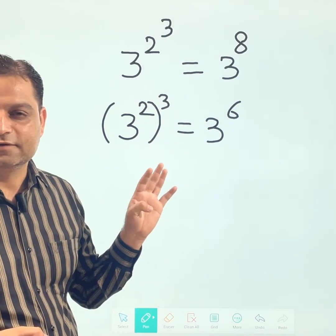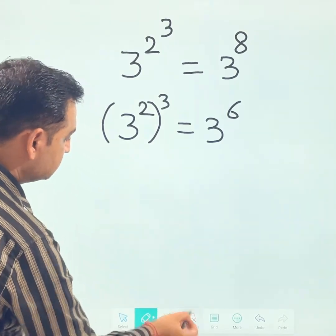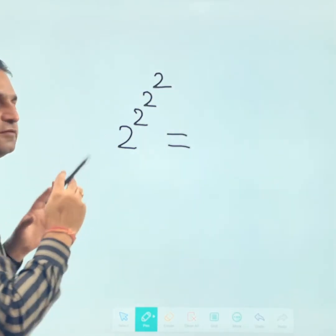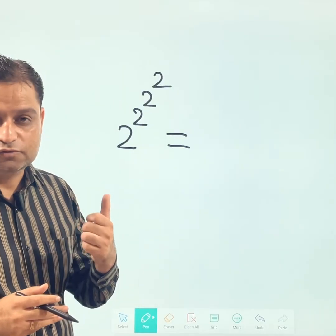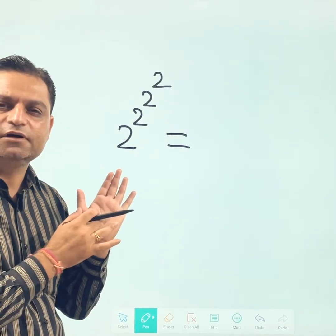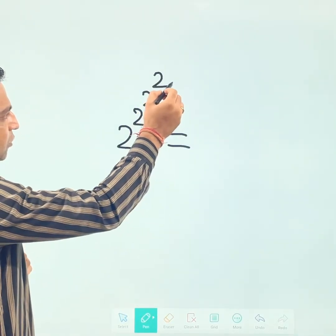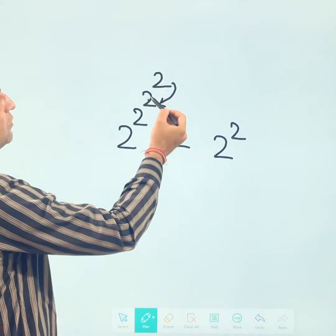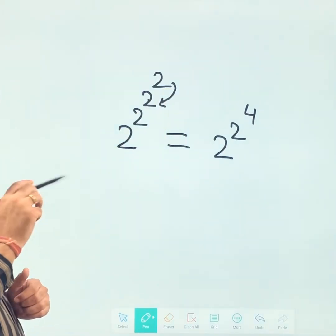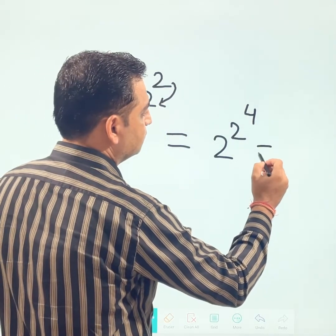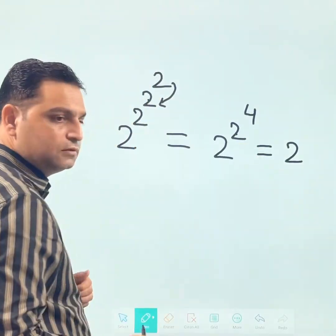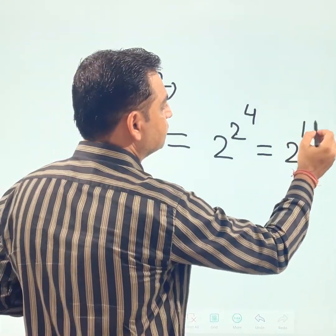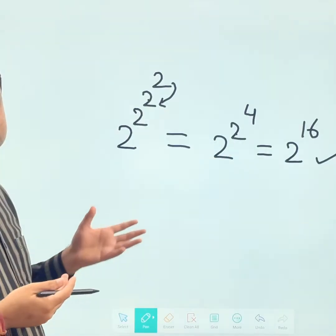I hope that is making sense. One more question: suppose we have 2 to the power 2 to the power 2 to the power 2. This is not difficult — let us apply the same concept. Come from top to bottom: first, 2 to the power 2 is 4. Then 2 to the power 4 means multiplying 2 four times: 2 times 2 times 2 times 2, which is 16. So the final answer is 2 to the power 16.